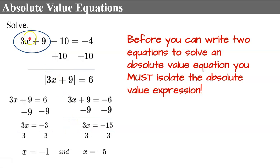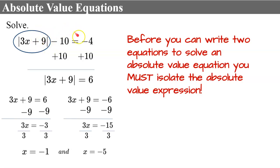Let's check. If I replace x with negative 1: 3 times negative 1 is negative 3, plus 9 is 6; the absolute value of 6 is 6; 6 subtract 10 is negative 4. Now check x equals negative 5: 3 multiplied by negative 5 is negative 15; negative 15 plus 9 is negative 6; the absolute value of negative 6 is 6; 6 subtract 10 is negative 4. So they both check.